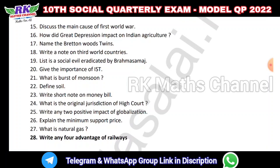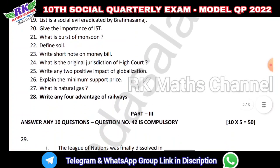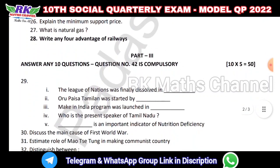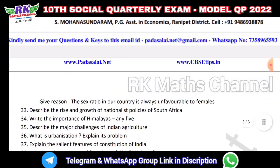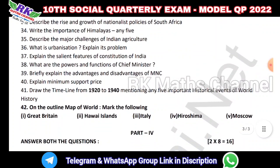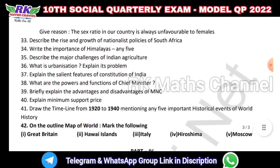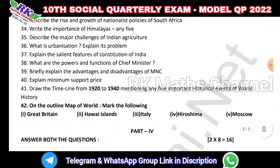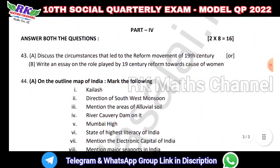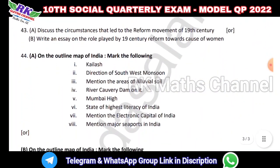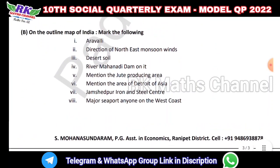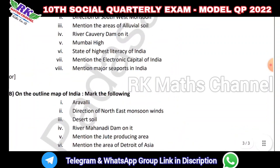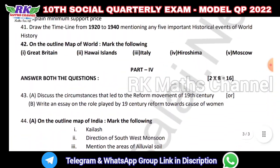Next, Part 3 has 8-mark questions. Question number 42 is the compulsory question. Part 4 also has 8-mark questions. One of these questions involves the map - you have to click on the India map or world map link provided.